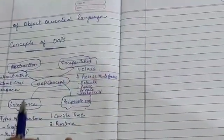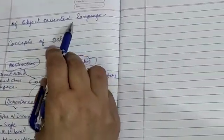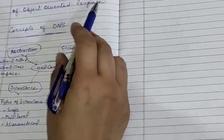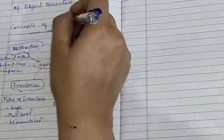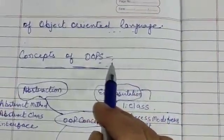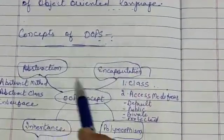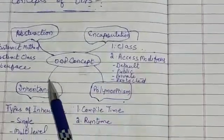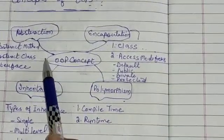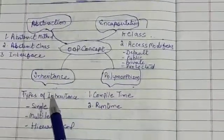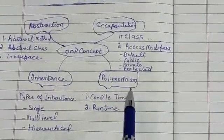Simula includes all the features of an object oriented language. The main pillars of object oriented programming system are: abstraction, encapsulation, inheritance, and polymorphism.